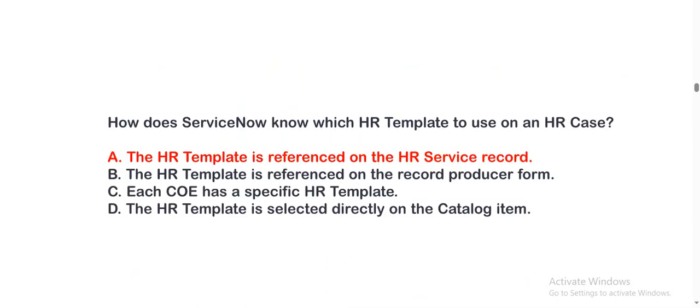Next question: How does ServiceNow know which HR template to use on an HR case? The options are: option A, the HR template is referenced on the HR service record; option B, the HR template is referenced on the record producer form; option C, each COE has a specific HR template; option D, the HR template is selected directly on the catalog item. The correct option is option A.